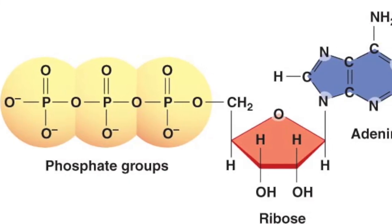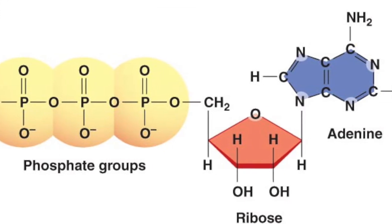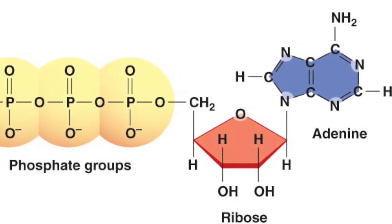Here's a diagram of the structure of ATP for you. It has a ribose sugar, an adenine base, and the three phosphate groups.